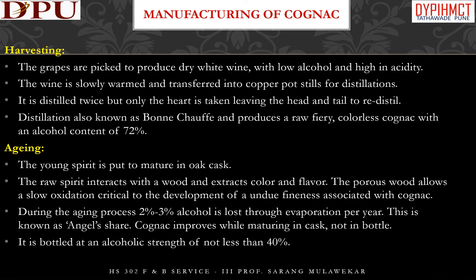Manufacturing process of cognac: Like wines, it starts with harvesting. The grapes are picked to produce dry white wine with low alcohol and high acidity. The wine is slowly warmed and transferred into copper pot stills for distillation. It is distilled twice, but only the heart is taken, leaving the head and tail to redistill. Distillation produces a raw, fiery, and colorless cognac with an alcohol content of 72%. The young spirit is then put to mature in oak casks, where it extracts color and flavor. During aging, 2-3% alcohol is lost through evaporation per year — this is known as the angel's share. Cognac improves while maturing in cask, not in bottle, and is bottled at not less than 40% alcohol.